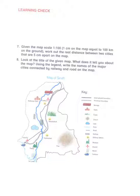Given the map scale 1 to 100 — that is, 1 cm on the map equals 100 km on the ground — work out the real distance between two cities that are 5 cm apart on the map. Since 1 cm equals 100 km, 5 cm equals 500 km. So the real distance between the two cities is approximately 500 km.